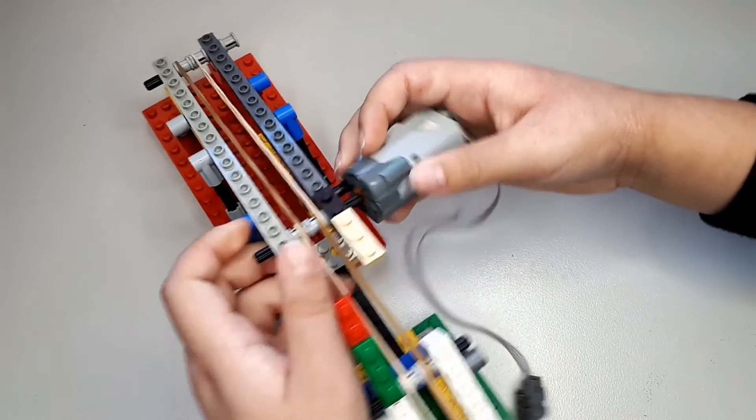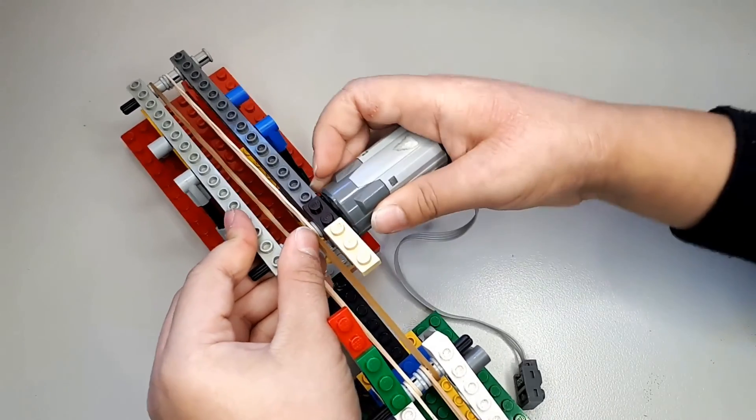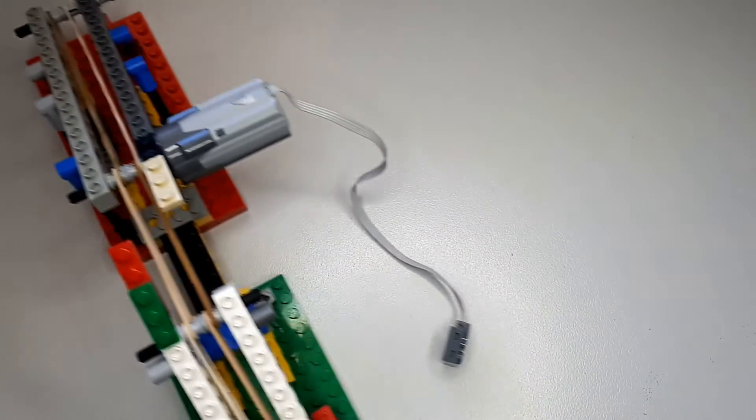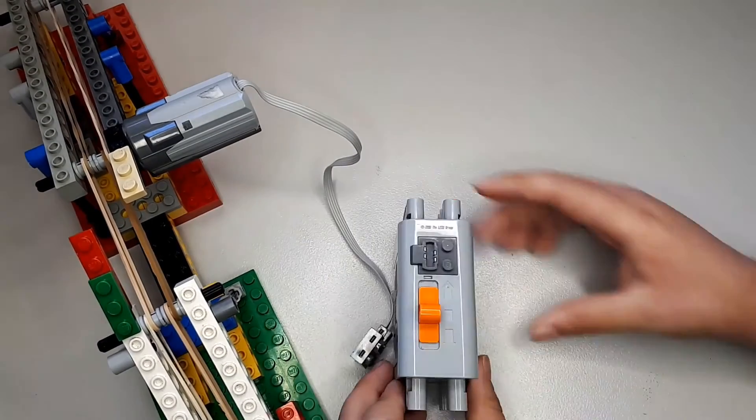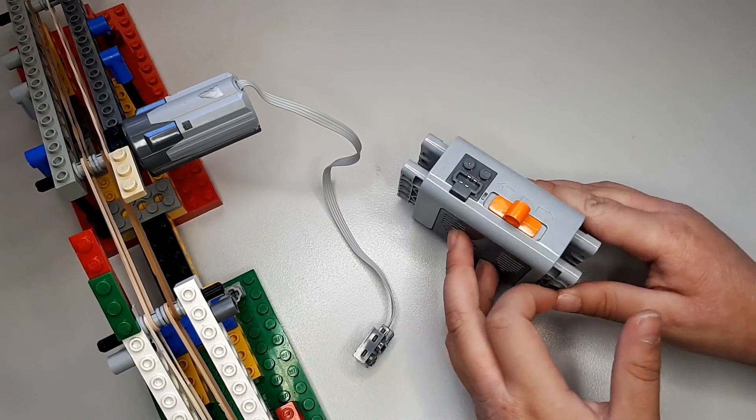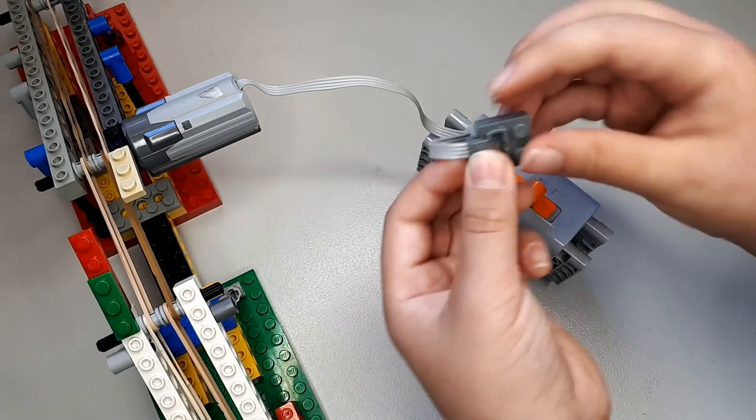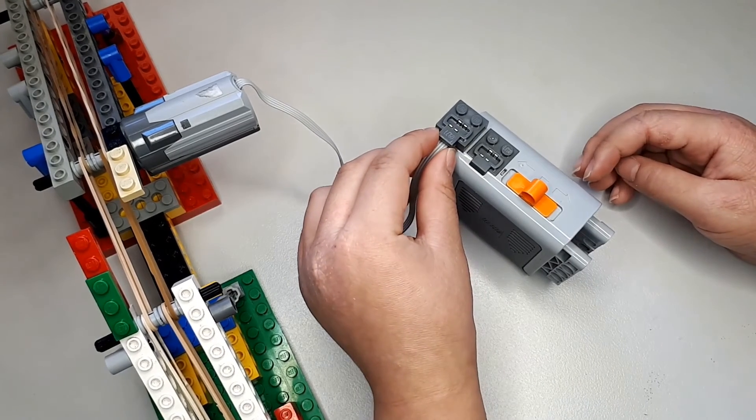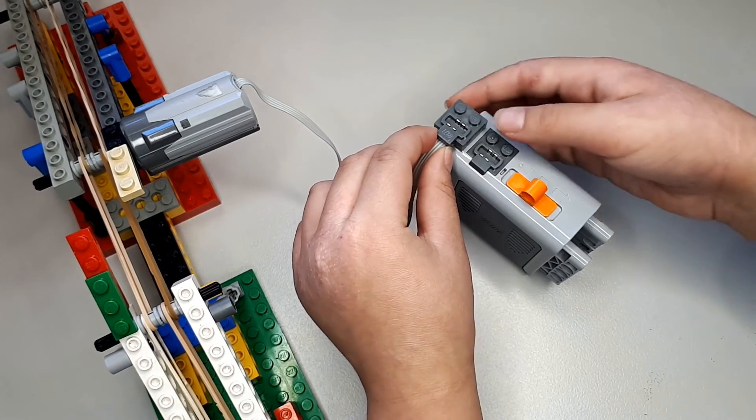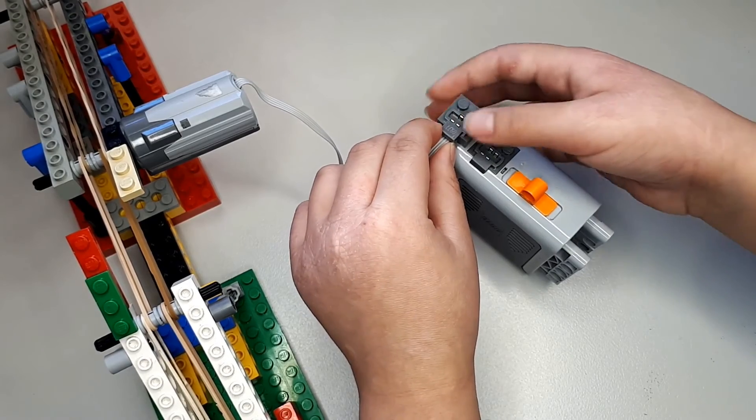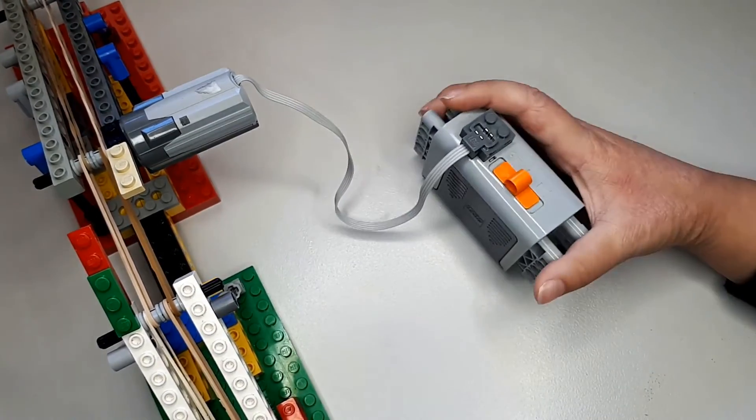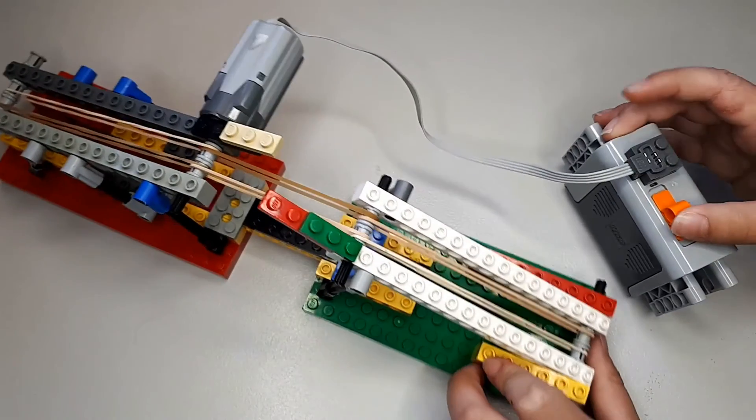So you just want to give it a couple of wiggles while you're pushing them together, and then they should all fit in. Now grab your battery and line the faces up so that they look identical, the eyes and the mouth. So put it on. Now you've got it working.